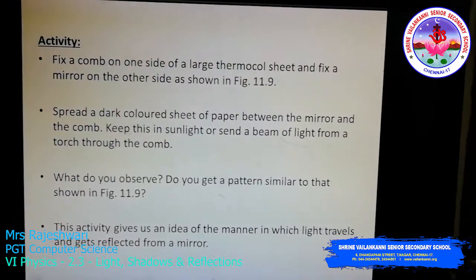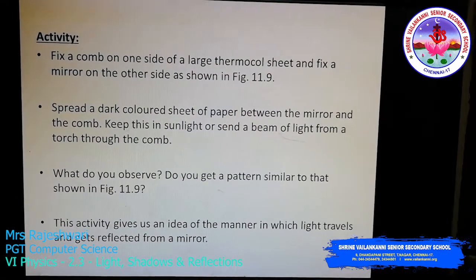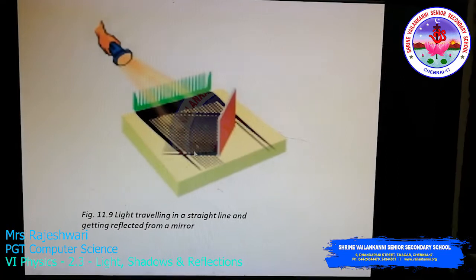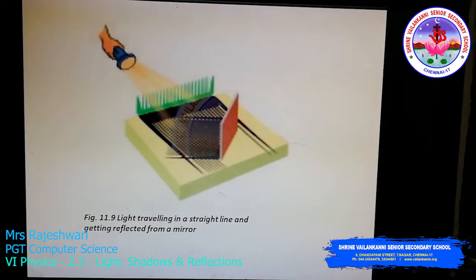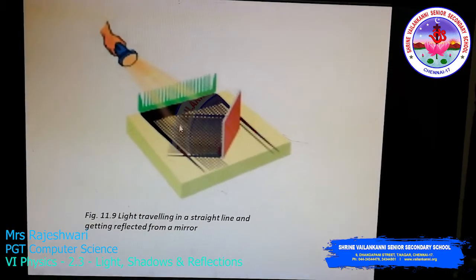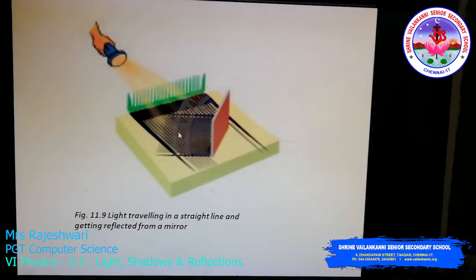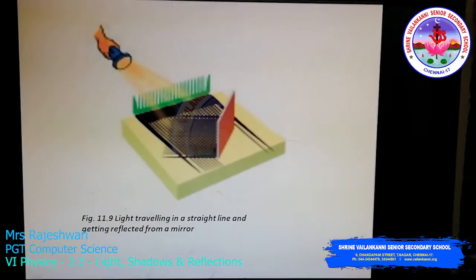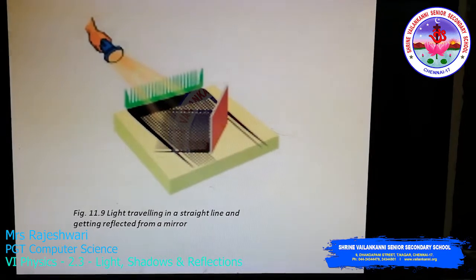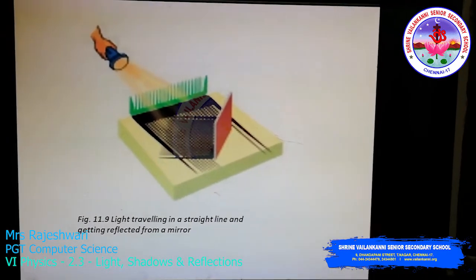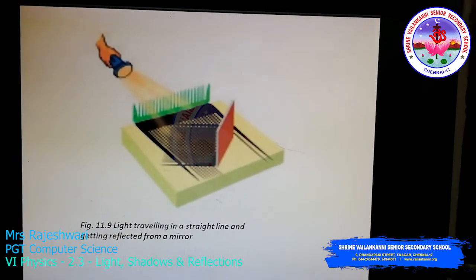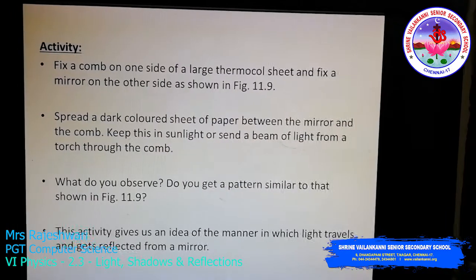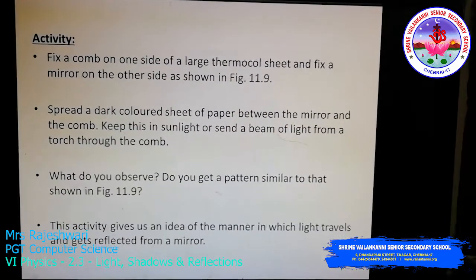Now let us look into another activity to understand more about reflection. For this activity, the things you need are: a large thermocool sheet, a comb, a torch, a dark sheet of paper to place between the mirror and the comb, and a glass mirror.